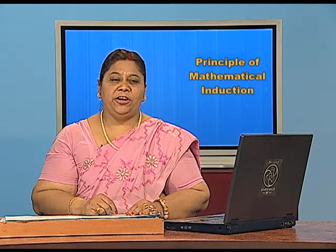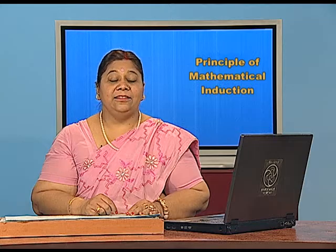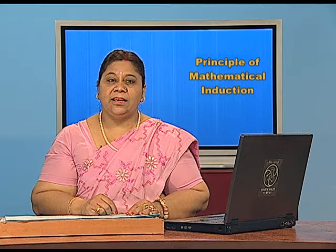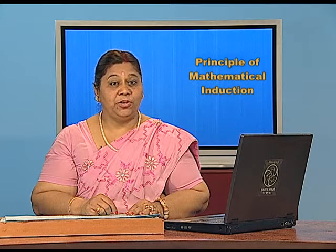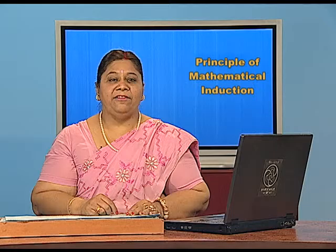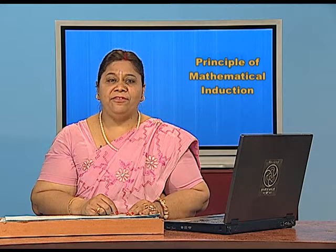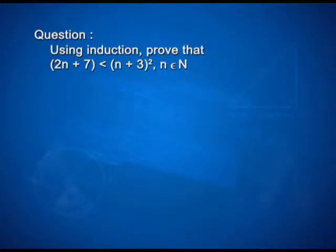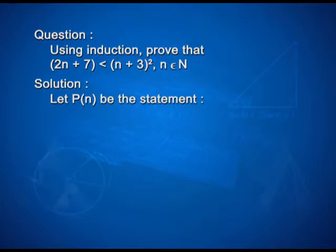Students, you must have enjoyed the questions we have solved till now, and you will find in your textbook similar questions based on series, inequality, divisibility, and exponents. I am sure you will be able to solve them. Now we have one more example involving inequality: using induction, prove that 2n plus 7 is less than (n+3)² for every n belonging to natural numbers. For the solution, let p(n) be the statement 2n plus 7 less than (n+3)².